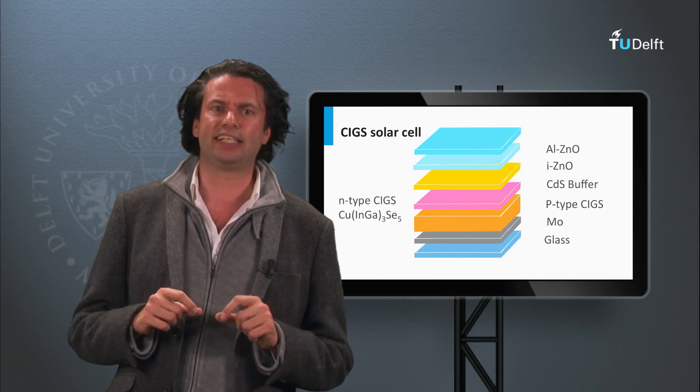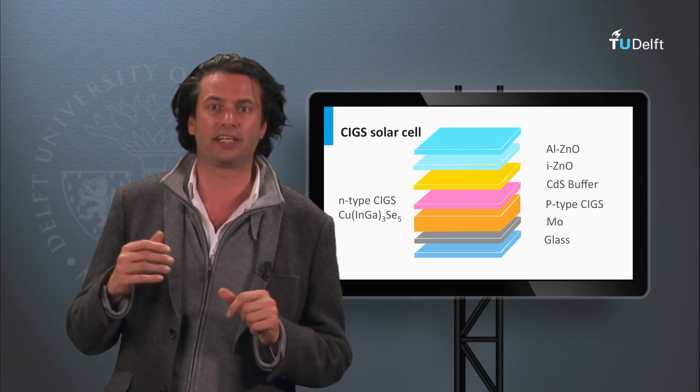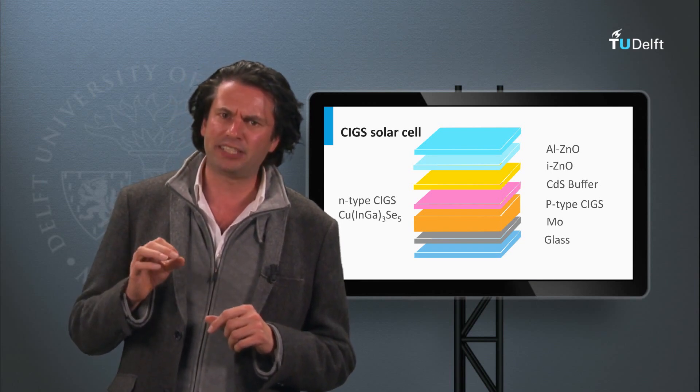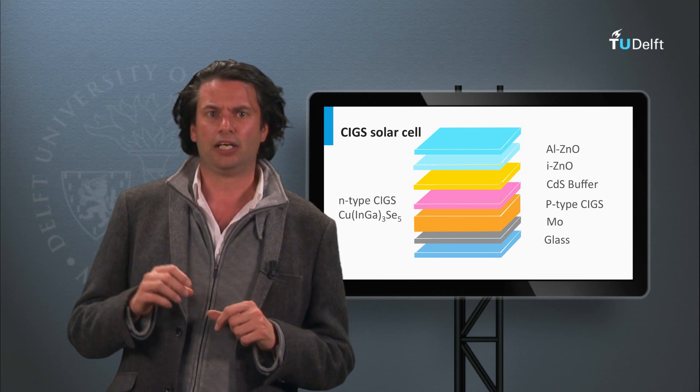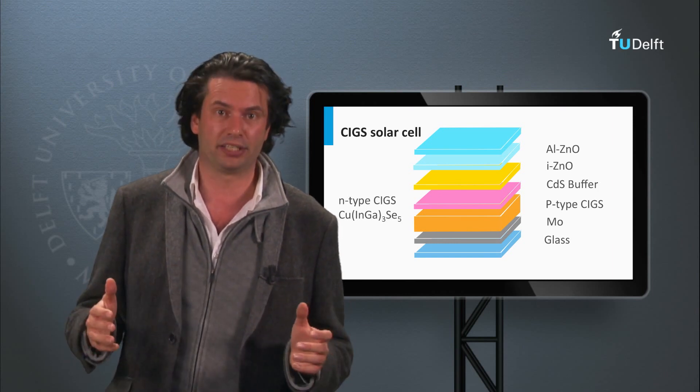The n-type CIGS is an indium-rich alloy like copper indium gallium selenide. In copper-deficient p-type CIGS materials, the dominant recombination mechanism is Shockley-Read-Hall recombination in the bulk.